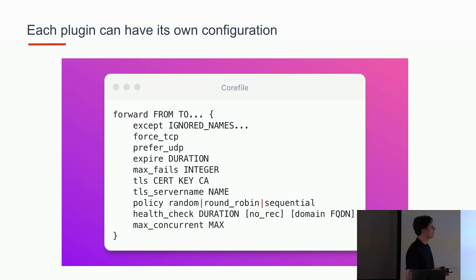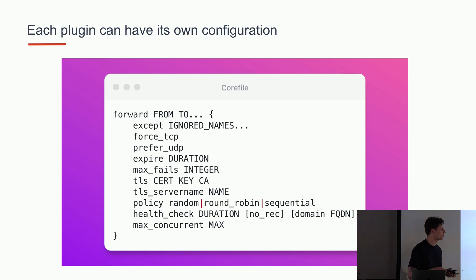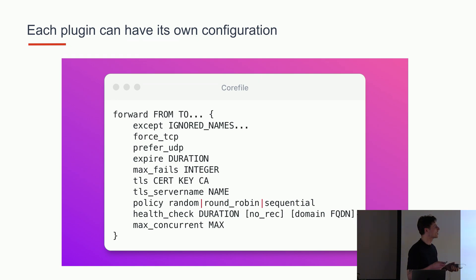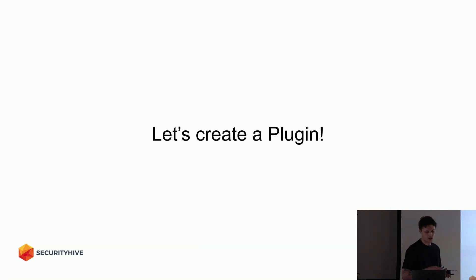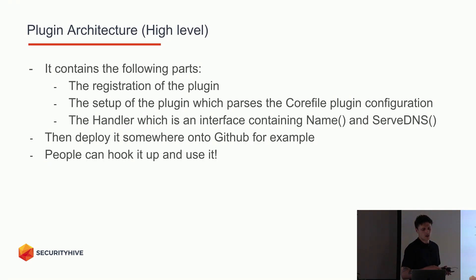You can have multiple server blocks to spin up multiple servers on different ports with different configurations. Each plugin can have its own configuration — just as we saw with the forward plugin forwarding to Cloudflare. You can configure much more, and that's the nice thing about the Corefile: you can really specify all the parameters that you need for your plugin to run. That's the basics of CoreDNS, and I think it's now time to create a plugin ourselves.